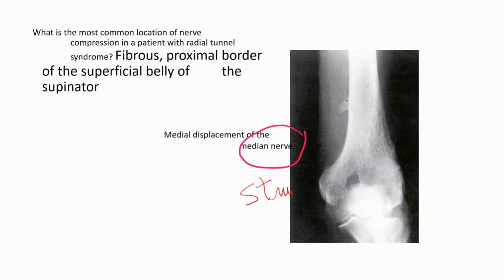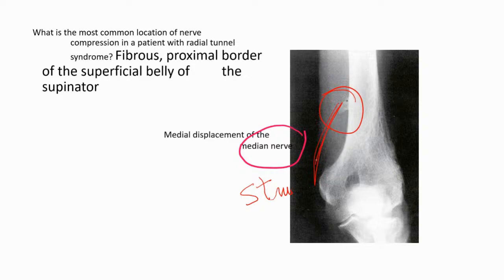Another problem for the median nerve is a small bony process called the medial process of the humerus, which you can see here. That process is attached to the Struthers ligament, and this ligament can compress and affect the median nerve.